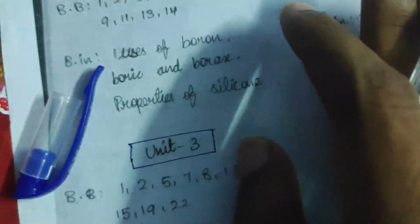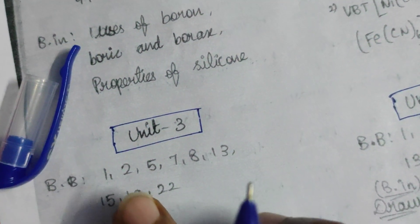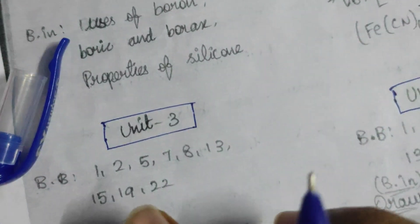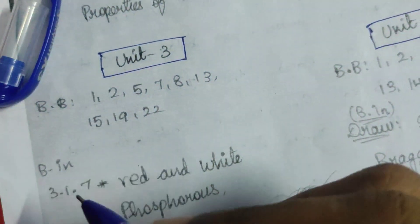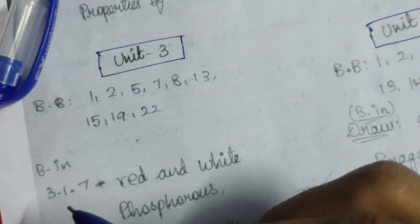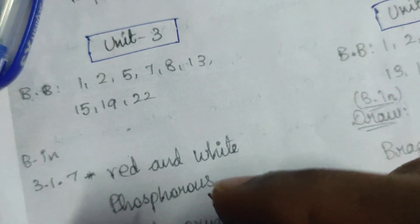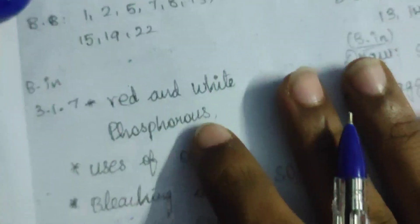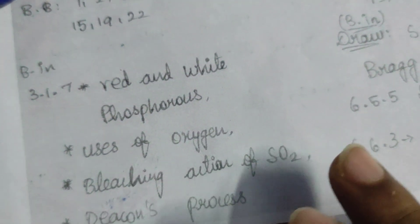Unit 3. This is the last limit of important questions. Suppose you learn everything. Unit 3 book back: 1, 2, 5, 7, 8, 13, 15, 19, 22. Booking 3.1, 7 — Red and White Phosphorus, Use of Oxygen, Bleaching action of SO2, Deacon's process. Deacon's process is very important.